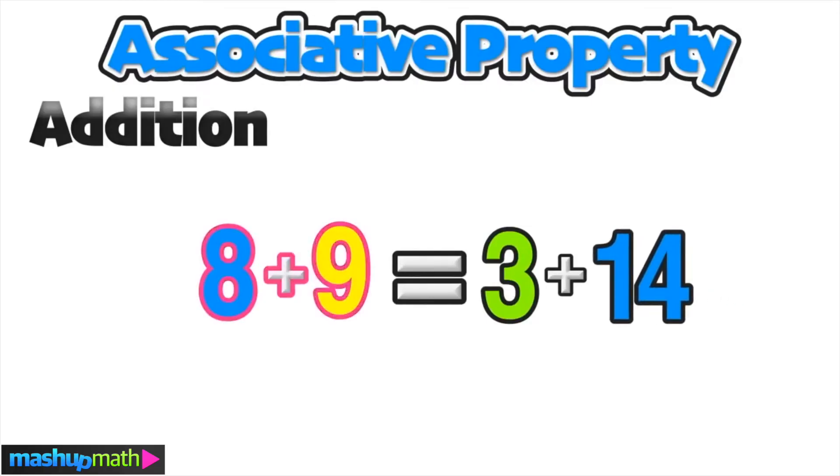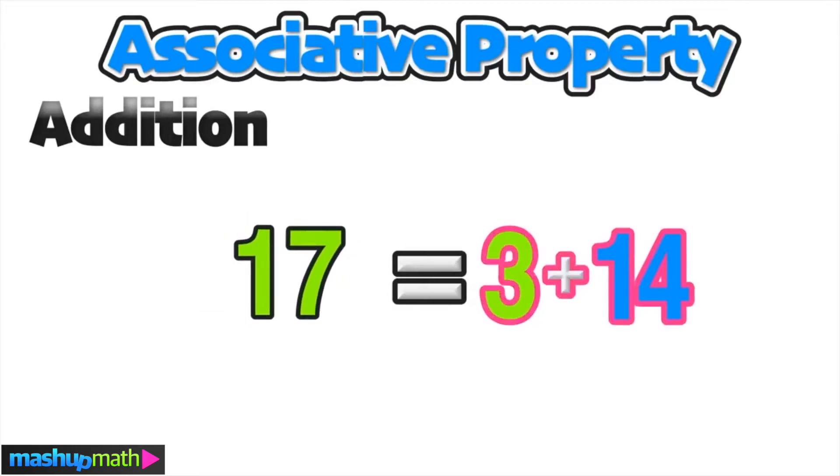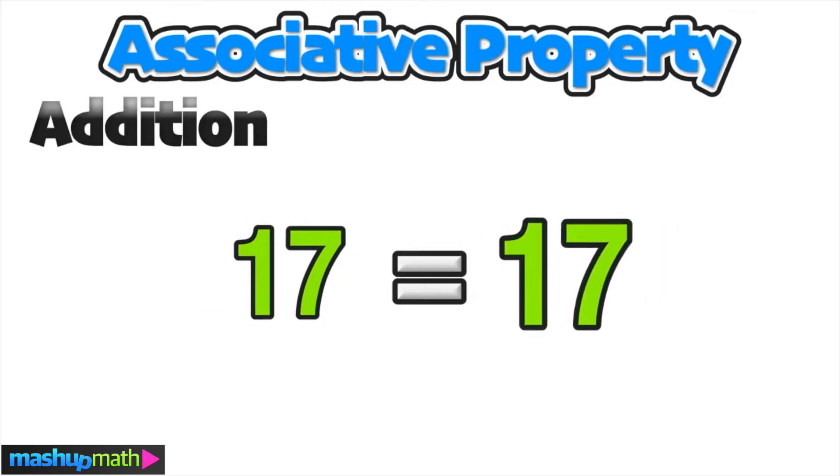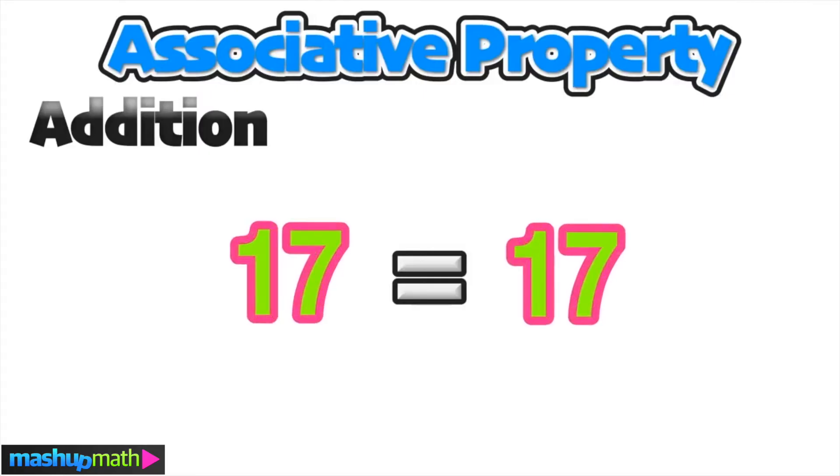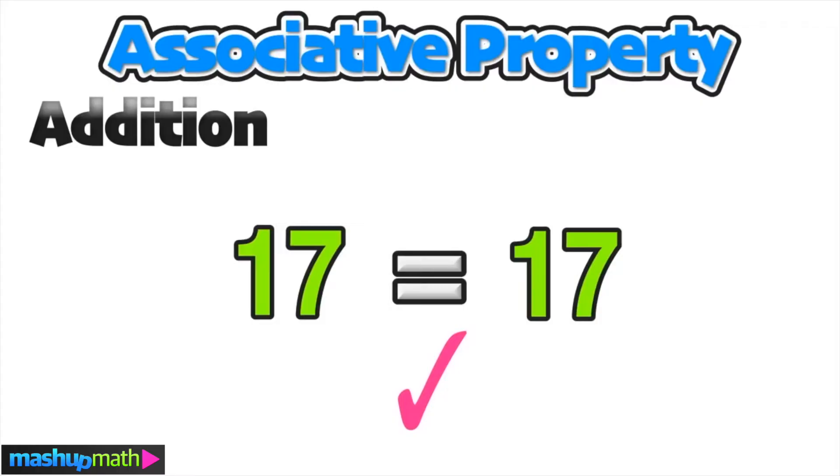We'll continue to simplify. On the left side, 8 plus 9 equals 17, and on the right side, 3 plus 14 also equals 17. 17 equals 17. This example should help us understand why the associative property works for addition.